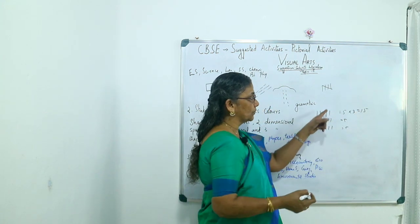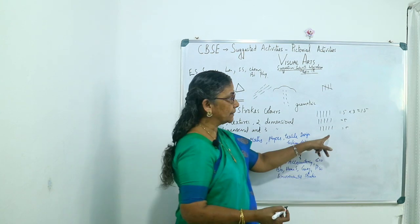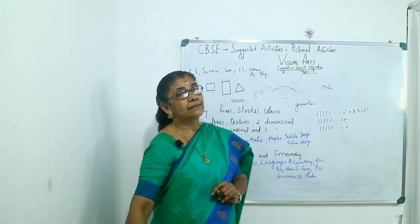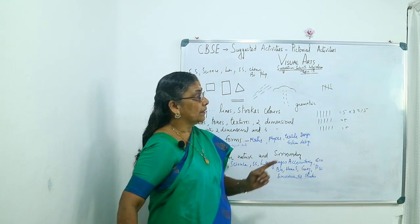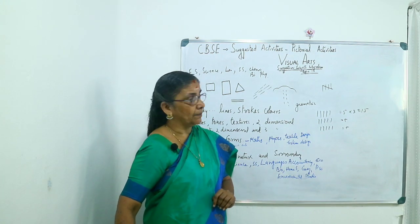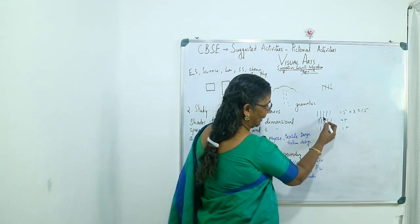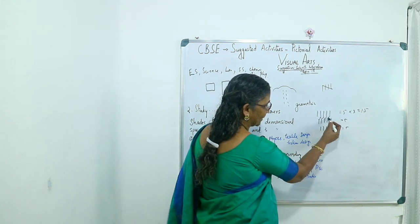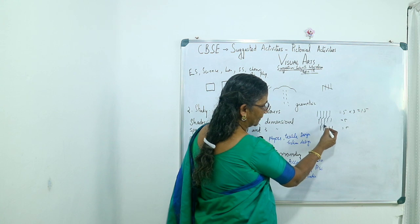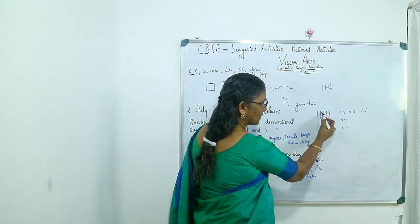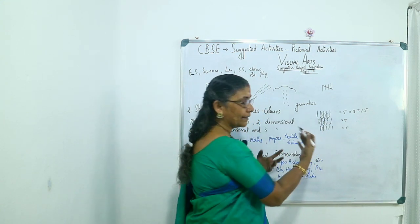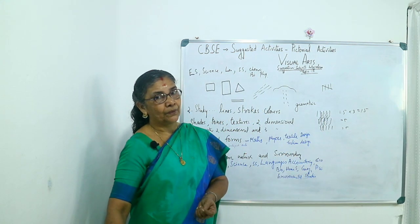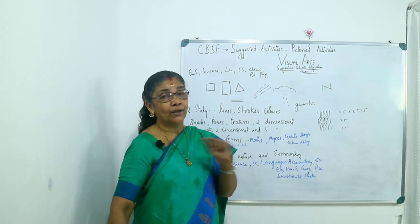This is an easier method to understand the multiplication table. You can also easily make a shade here and make the children explore more. Some color combinations you can use, and that way you can also get different shapes by drawing the lines.